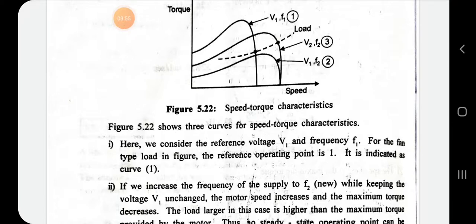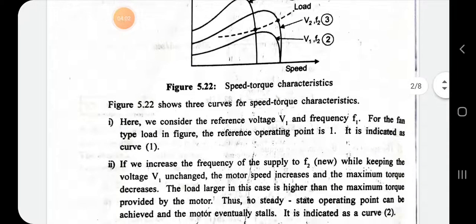When frequency increases, maximum torque decreases while speed increases. However, the steady-state operating point cannot be achieved because the second characteristic curve falls below the dotted load line. The steady-state point can only be achieved above the load characteristic dotted line, and this is indicated as point number two.